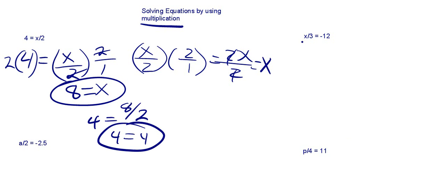So let's look at another example. We're dividing our variable. The inverse operation of division is multiplication. So we're going to take our x divided by 3 is equal to negative 12. We're going to undo this by multiplying both sides by the denominator, the bottom number, which is 3.